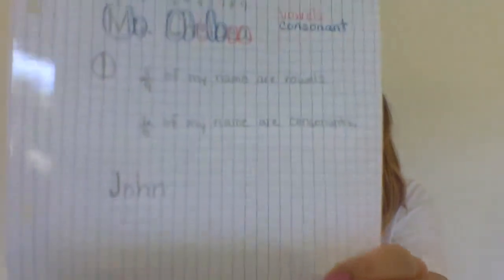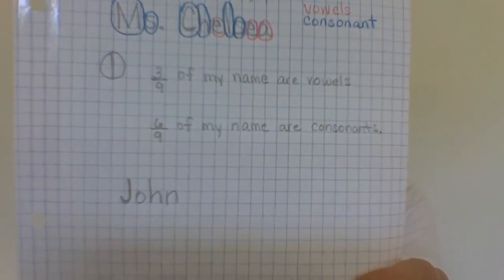Now let's try someone else in the family. You can choose a family member and I'll choose a family member. Just like with our name, you'll write their name down. Then using those same colored pencils, you'll circle the vowels in the same color as your name, and then circle the consonants in the same color that you circled the consonants of your name.